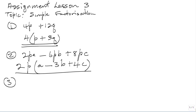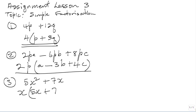Number 3 is 5X squared plus 7X. Looking on these two terms, X is the only common factor, because X can go into 5X squared and X can go into 7X. So you take out X. X into 5X squared is 5X, plus X into 7X is 7. The factors are X and 5X plus 7. This is the solution.